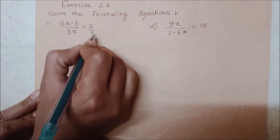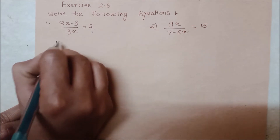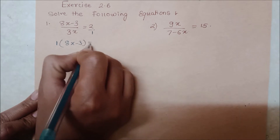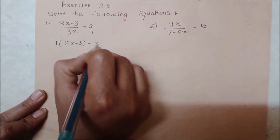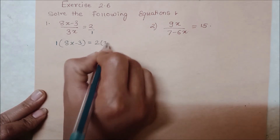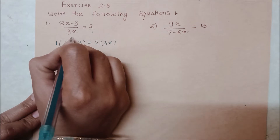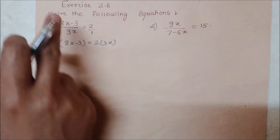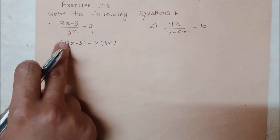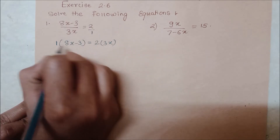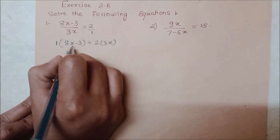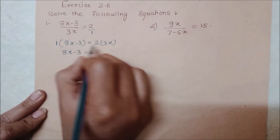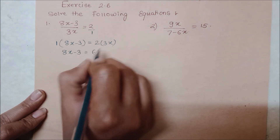Cross multiply karne par: 1 into 8x minus 3 is equal to 2 into 3x. Yani 8x minus 3 ek taraf rahega. Bas cross multiply karna hai — isko neeche wale se, isko upar wale se. Toh once koi bhi term ko multiply karenge, 8x minus 3 hi rahega, aur yah 2 times 3x, so 6x ho jayega.